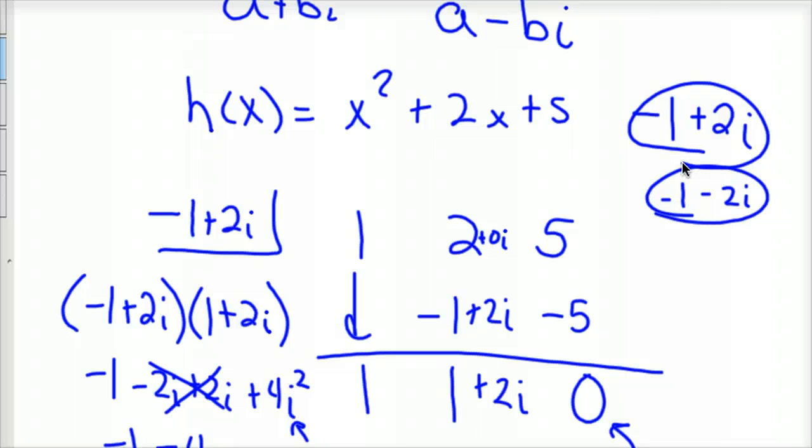Now you could have also done the same thing with the quadratic formula and did the x equals negative b plus or minus the square root of b squared minus 4ac all over 2a. But you could use the quadratic formula too, and that would also produce those two.